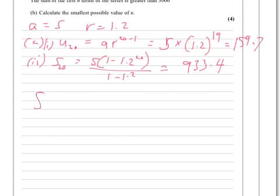that the sum of the first n terms is greater than 3,000, and we're looking for the first value of n that makes that work,